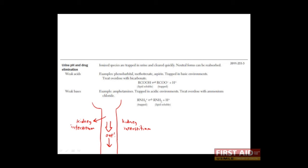Molecules which are uncharged, on the other hand, are more lipid soluble or lipophilic and can pass through the epithelial barrier and re-enter the blood circulation. Therefore, one way to increase the excretion of drugs is to make sure that the drug is in its charged form when it's in the urine. For weak acids, like phenobarbital, methotrexate, and aspirin, we do this by making the urine basic — that is, we increase the pH.